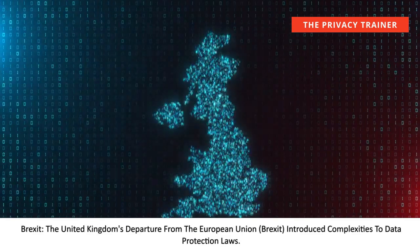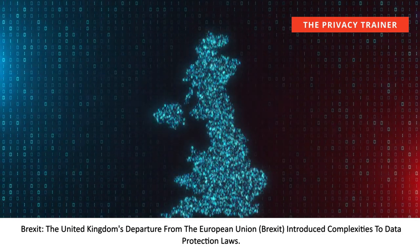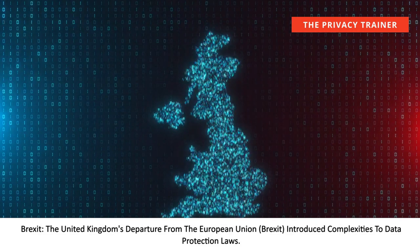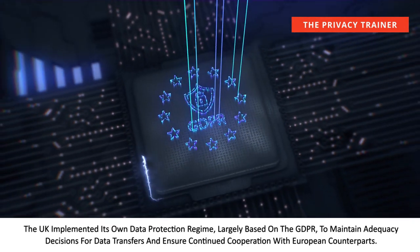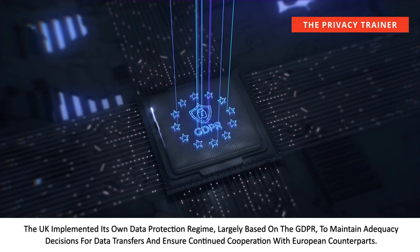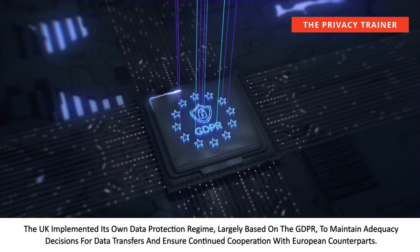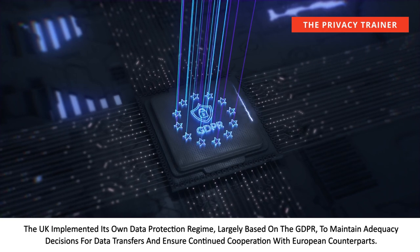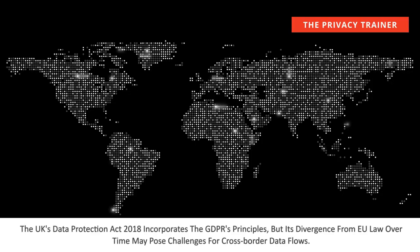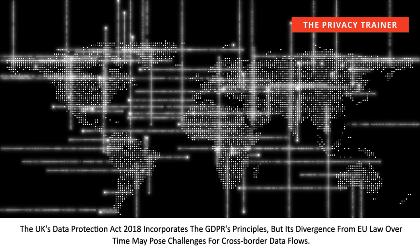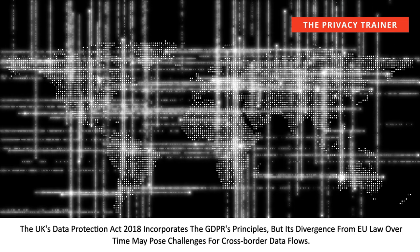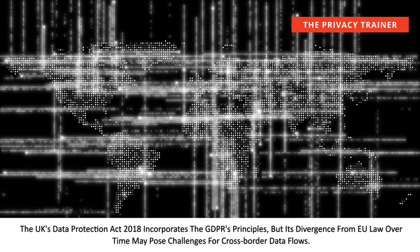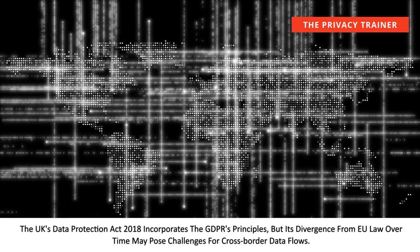Brexit: the United Kingdom's departure from the European Union introduced complexities to data protection laws. The UK implemented its own data protection regime, largely based on the GDPR, to maintain adequacy decisions for data transfers and ensure continued cooperation with European counterparts. The UK's Data Protection Act 2018 incorporates the GDPR's principles, but its divergence from EU law over time may pose challenges for cross-border data flows.